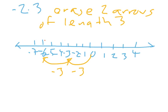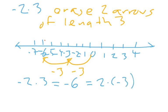Negative two times three is negative six, which is the same as saying two times negative three. Because if you look at what's left, it looks like what I've done — once all that erasing is done — is I've drawn two arrows of length negative three. Negative two times three is the same as two times negative three.